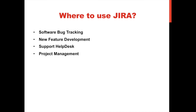So where do we use Jira? Jira is being used for software bug tracking. It is also used in new feature development and product launches. It's widely used in support help desk and it is a very good tool for project management.